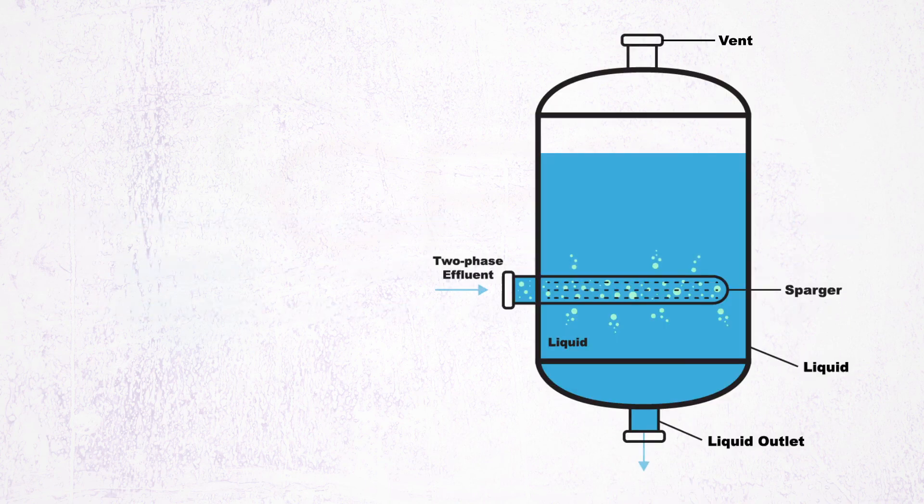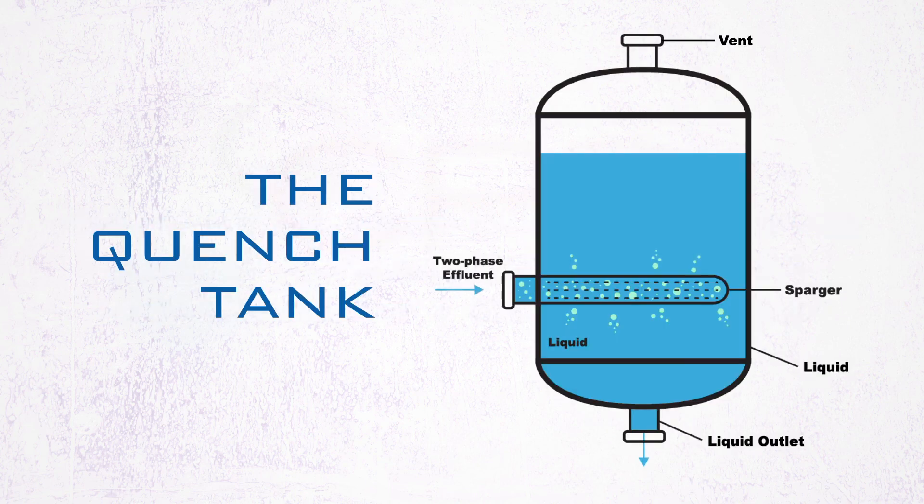Join us next time when we discuss another important piece of effluent handling equipment, the quench tank, and learn when it should be used instead of a knockout tank. Please don't hesitate to contact Fauski and Associates for all your relief system design needs.